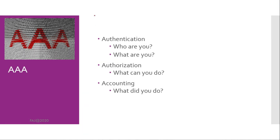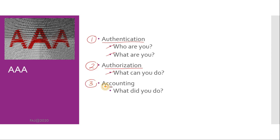Authentication, authorization, and accounting, or AAA, is a key computer security concept that defines the protection of network resources. Authentication is the verification of identity and credentials. Authorization determines if the device or user is authorized to have access to network resources. Accounting is tracking the use of network resources by users and devices.